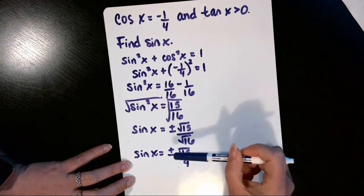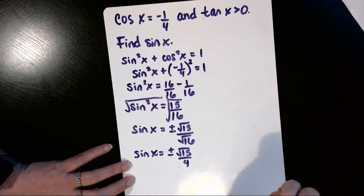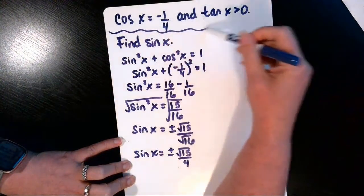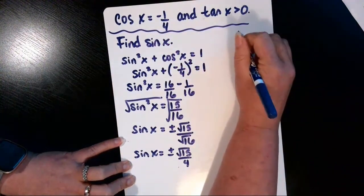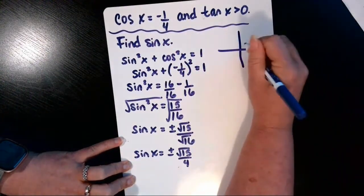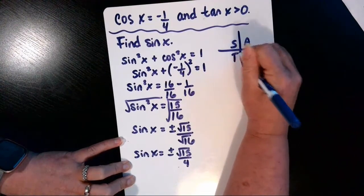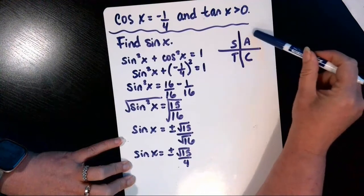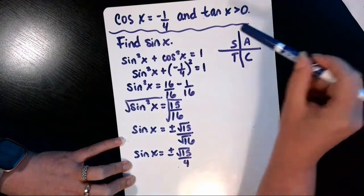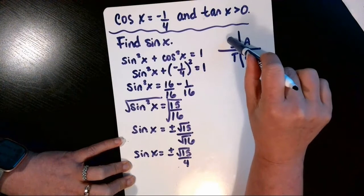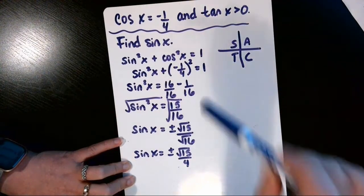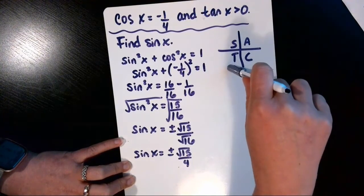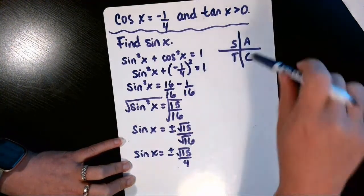Now it can't be both. It can't be positive and negative at the same time, so we need to figure out based on our given information which to keep. So if we remember that acronym all students take calculus, we know that the A tells us in quadrant 1 all of the trig functions are positive. In quadrant 2, sine and its reciprocal cosecant are positive. In quadrant 3, tangent and its reciprocal cotangent are positive.